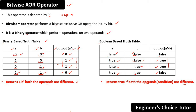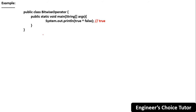You have to remember these two points. The bitwise XOR operator is applicable for both boolean and integral types. Let's see the boolean case first. In our BitwiseOperator class, in the System.out.println statement I am performing the bitwise exclusive OR operation on the boolean values true and false. Since both operands are different, the conclusion tells us the output will be true.